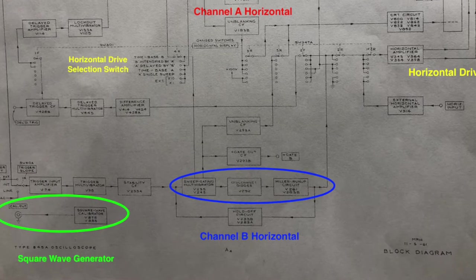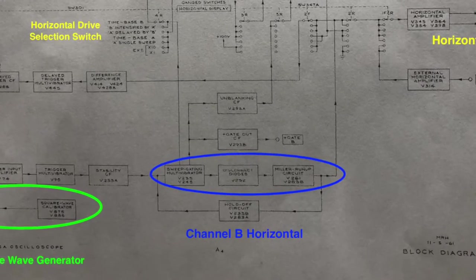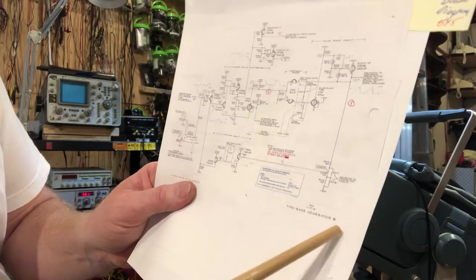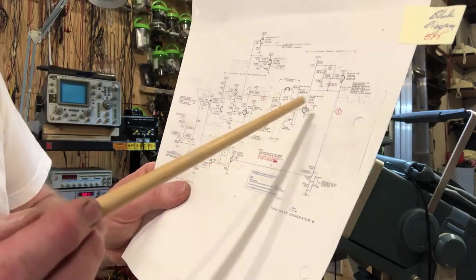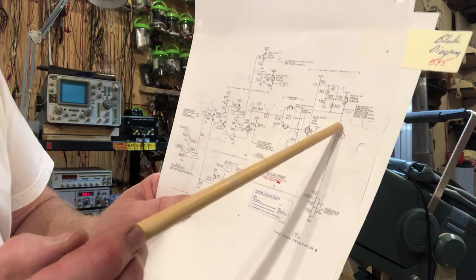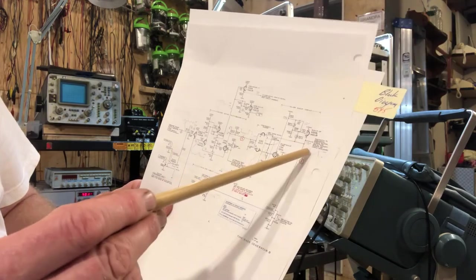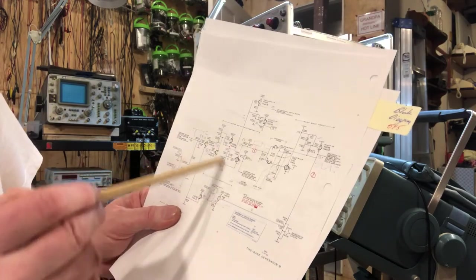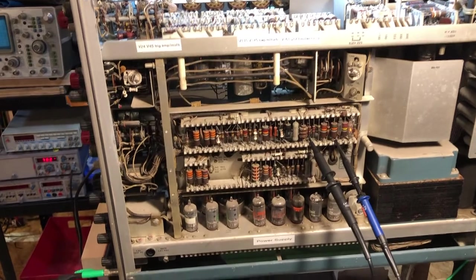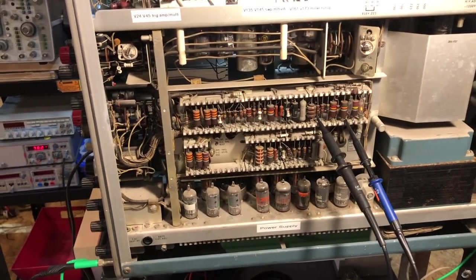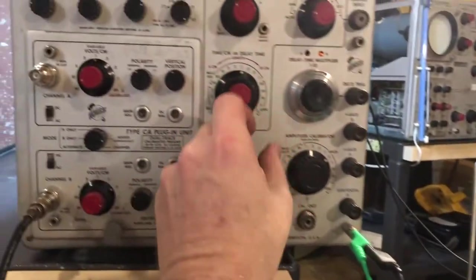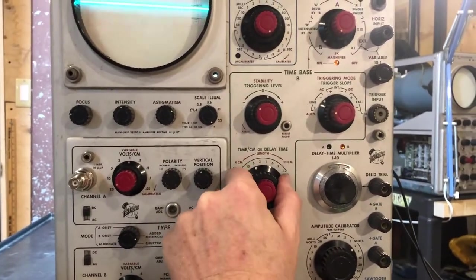We'll start by looking at channel Bravo horizontal. We'll look at the output from the sweep gating multivibrator and the output from the Miller run-up circuit. For the channel B time base generator, I'm going to measure the output from the Miller run-up amp, which is essentially what goes to the horizontal deflection plates. Then I'll look at the output from the multivibrator oscillation circuit, taking a look at both signals on the B-sweep by adjusting the B time base on the scope.